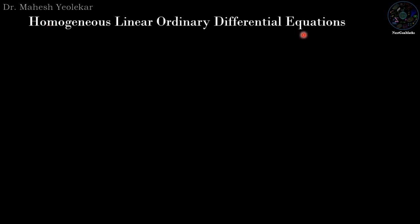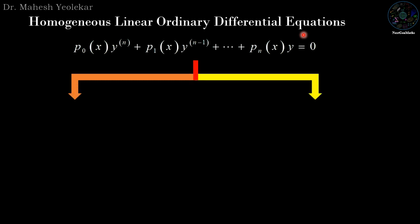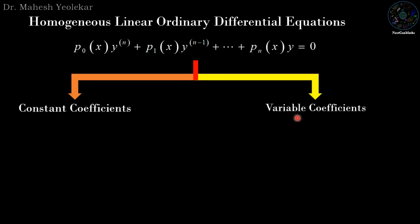Homogeneous linear ODEs are further classified into constant coefficient and variable coefficient types, depending on the coefficients p₀(x), p₁(x), ..., pₙ(x). If they are constants, it is a homogeneous linear ODE with constant coefficients; if they are functions of x, it is a variable coefficient equation.